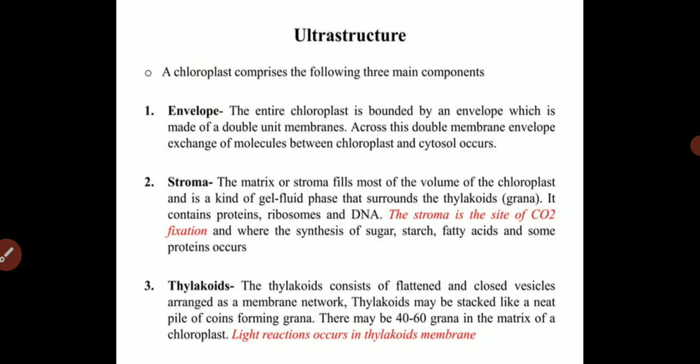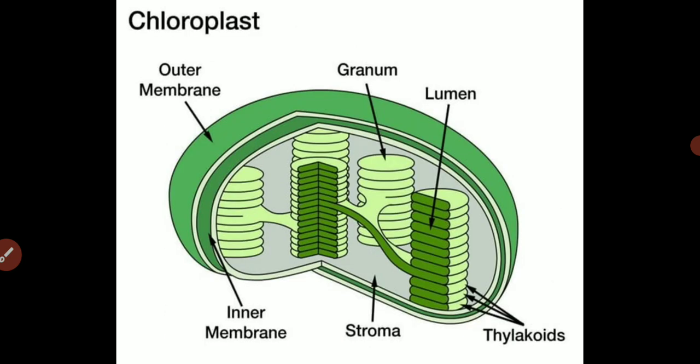This slide talks about the ultrastructure of chloroplast. The chloroplast contains an envelope and is a double membrane organelle — also called an endomembrane organelle. There is an outer membrane and an inner membrane. Inside the inner membrane is a matrix, a jelly-like substance where cellular components float. The matrix contains proteins, RNA, DNA, ribosomes, and essential enzymes involved in protein synthesis.